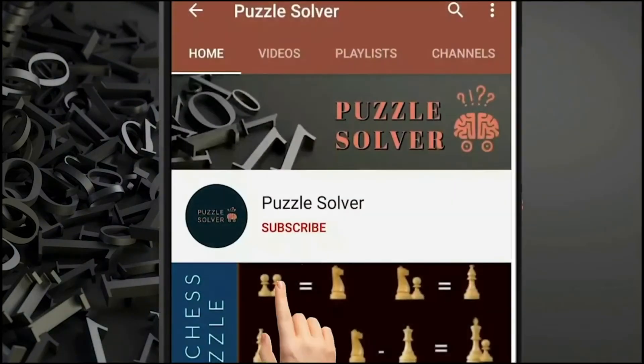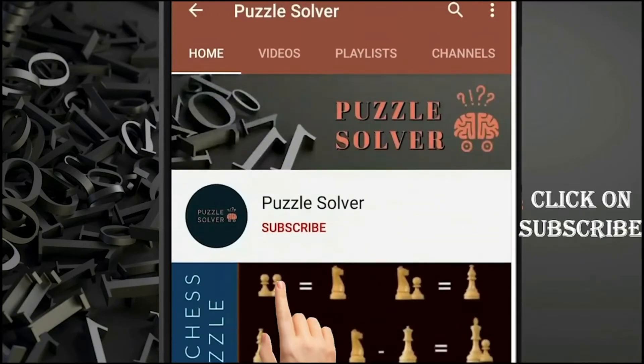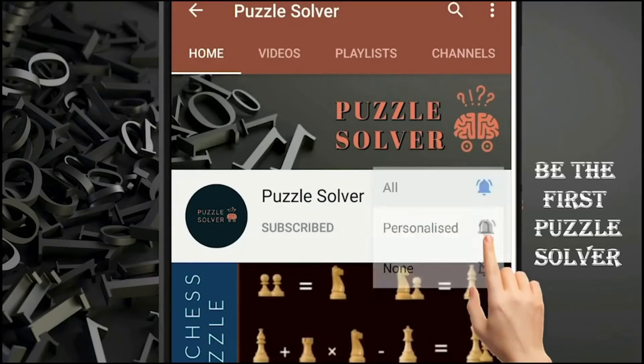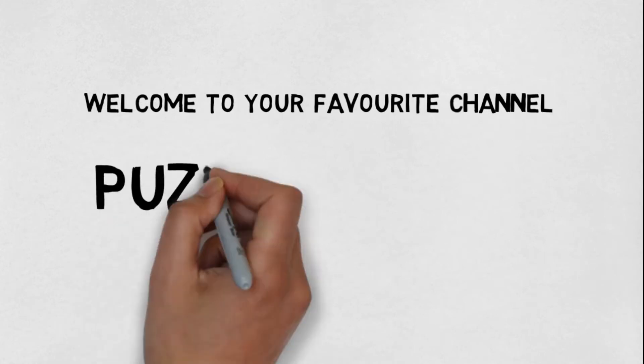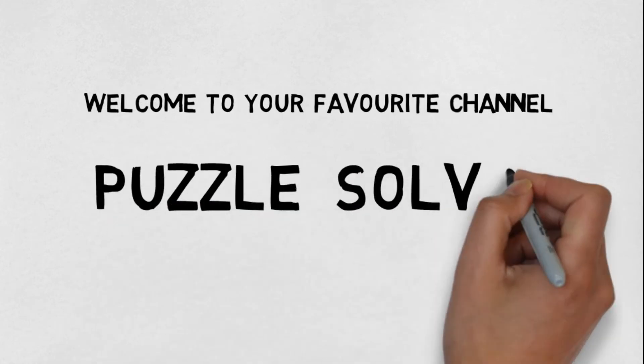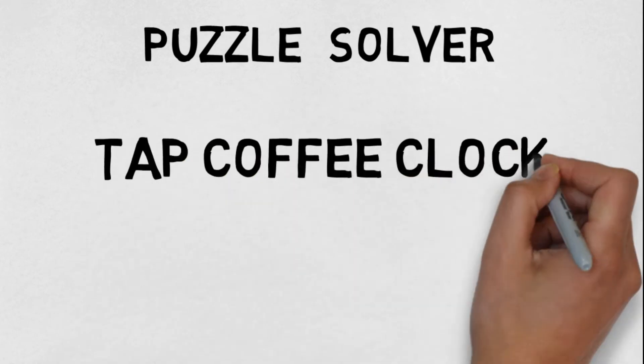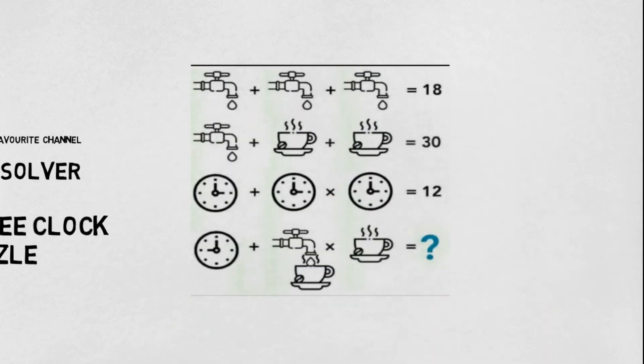Hey friends, for the latest puzzle solution please click on the subscribe button and click on the bell icon to be the first puzzle solver. Welcome to our favorite channel Puzzle Solver. Friends, we have a very interesting puzzle which is called tap, coffee, and clock puzzle. In this puzzle we have three images present: tap, coffee, and clock.